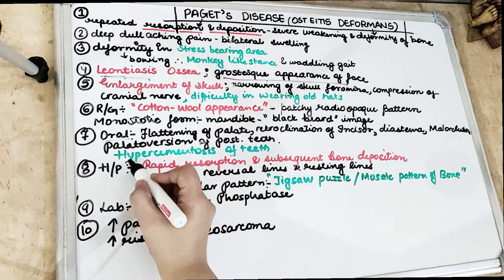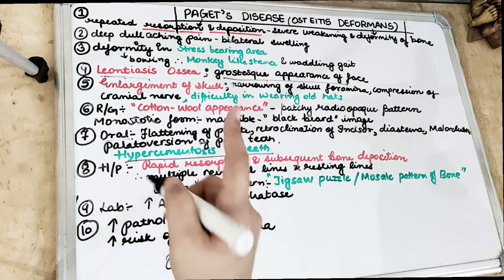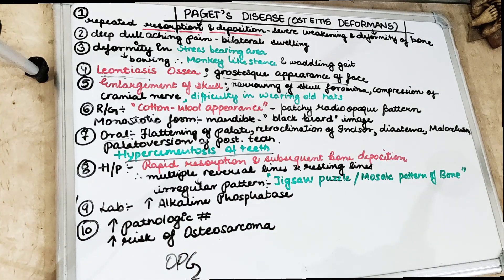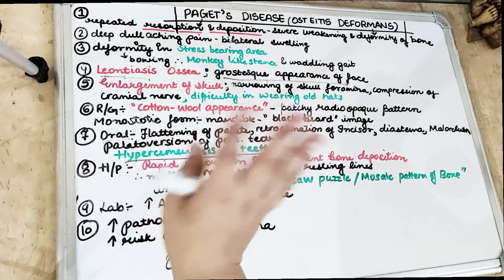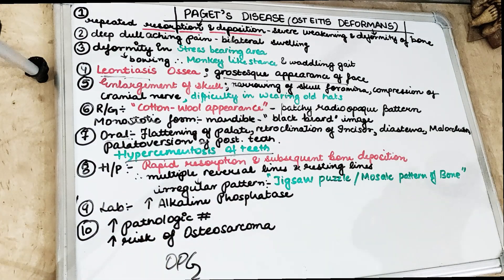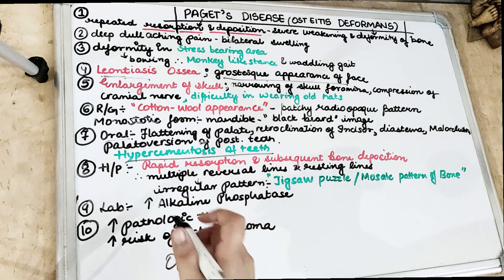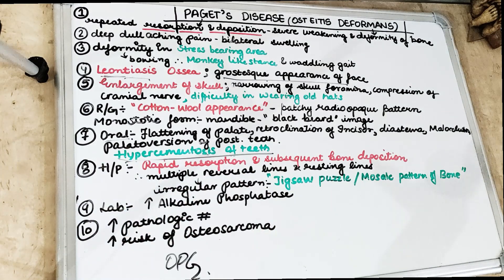We also see generalized hypercementosis involving the entire dentition. When looking at the OPG of these patients, if the mandible is involved in monostotic form — where only one bone is involved — the mandible appears like a black beard appearance on the bone scan, as if the patient is wearing a black beard. On OPG we see generalized hypercementosis, and sometimes ankylosis, obliteration of the PDL space, and loss of lamina dura.